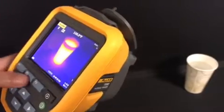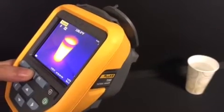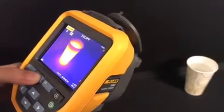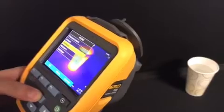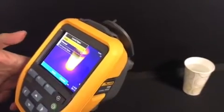You can also adjust level and span on this camera automatically or manually, depending on your preference. This is easily changed by accessing the main menu, going into measurement, set level and span, and picking between auto and manual.